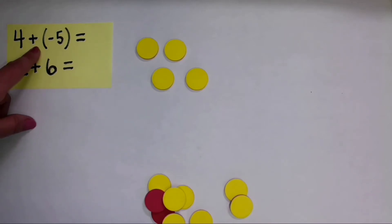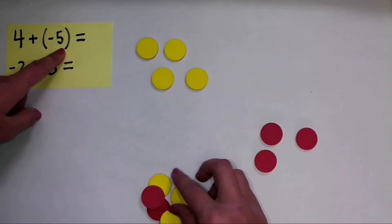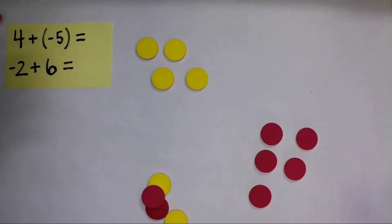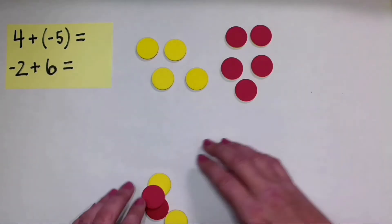Now to that, I'm adding negative 5. So I'm going to get negative 5 counters that show negative 5, and then I'm going to add them to my positive 4.